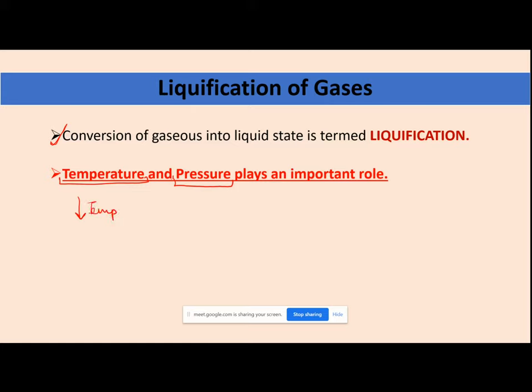When we talk about temperature, we talk about the kinetic energy of molecules. The molecules are randomly moving in gases. You reduce that energy as you reduce the temperature. When the energy is reduced, the molecules will not freely move — they will easily attract one another, interact with one another, form a bond depending upon their property, and can get easily liquefied. You can convert them into a liquid form.